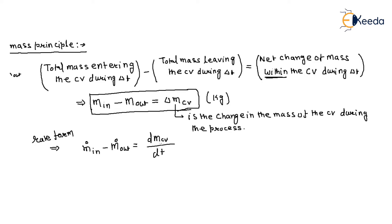Here, dMCV/dt is not written with a cut through the d, because this is the property within the control volume — it does not cross the boundary. But the mass flow terms do cross the boundary, so they are written with a cut d. Mass in crosses the boundary into the control volume, and mass out crosses the boundary and leaves. The right-hand side represents mass accumulated within the control volume. Units are kg per second.